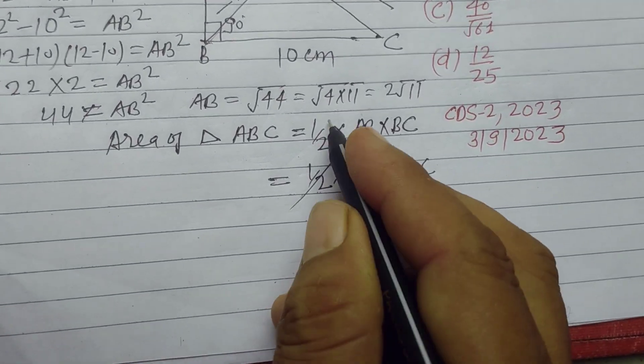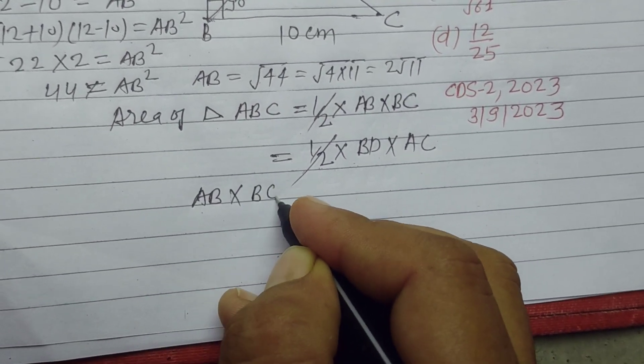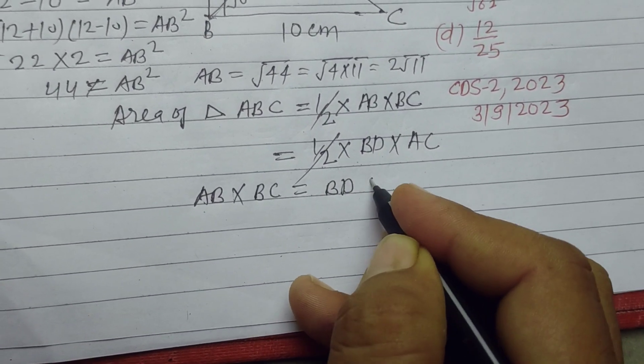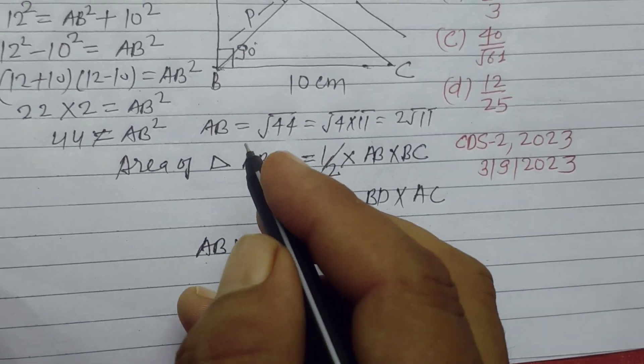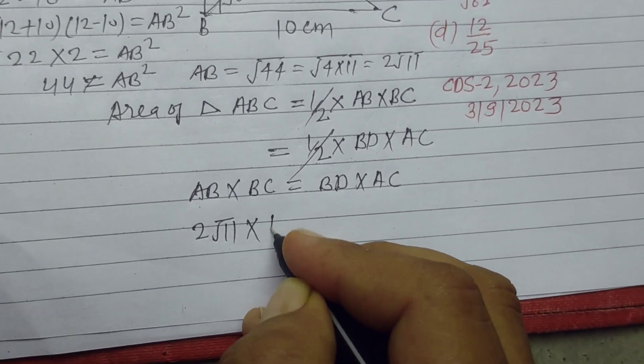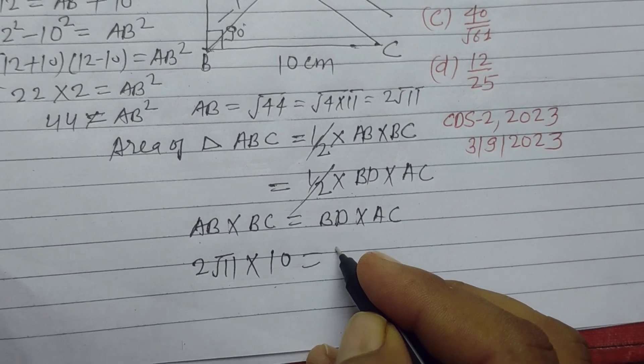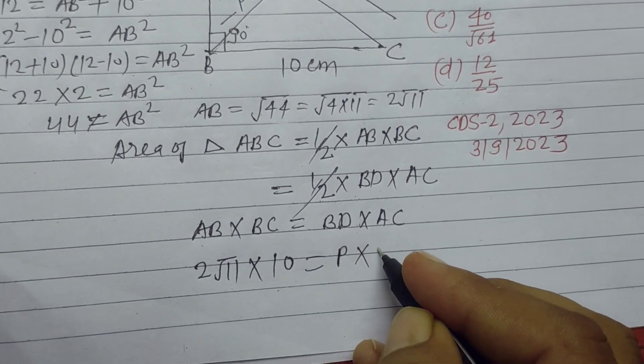When these are equal, half cancels. We get AB into BC equals BD into AC. AB is 2 square root of 11, BC is 10, and BD is required. Half of BD into AC is 12.